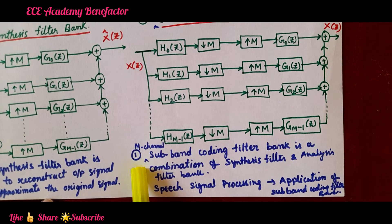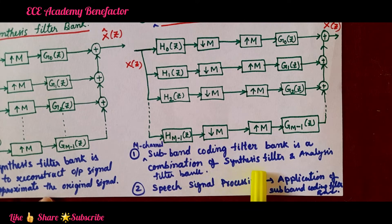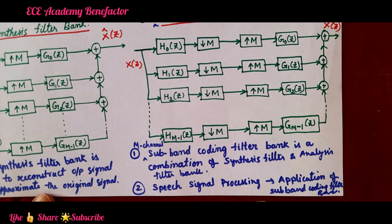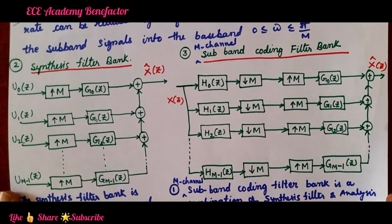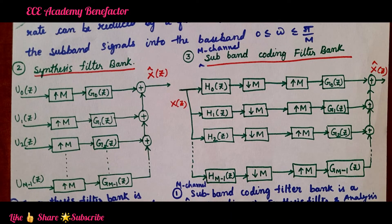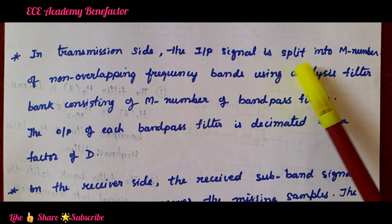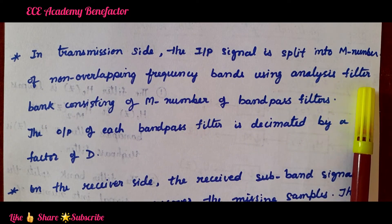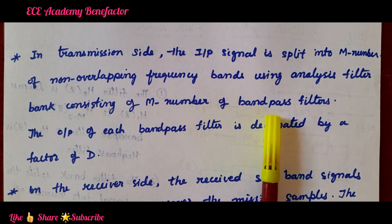Two important points: The m-channel subband coding filter bank is a combination of synthesis filter and analysis filter, with application in speech signal processing. On the transmission side, the input signal is split into m overlapping frequency bands using an analysis filter bank consisting of m bandpass filters. The output of each bandpass filter is decimated by a factor of d.